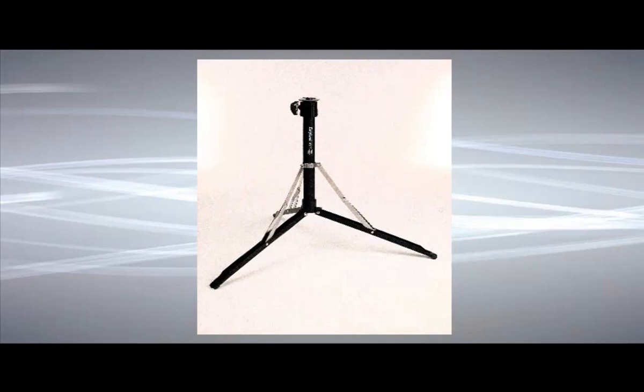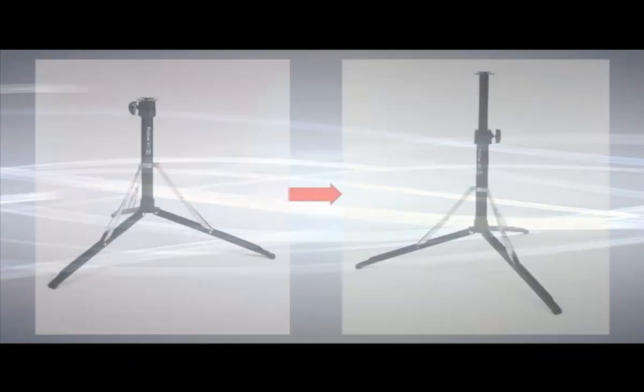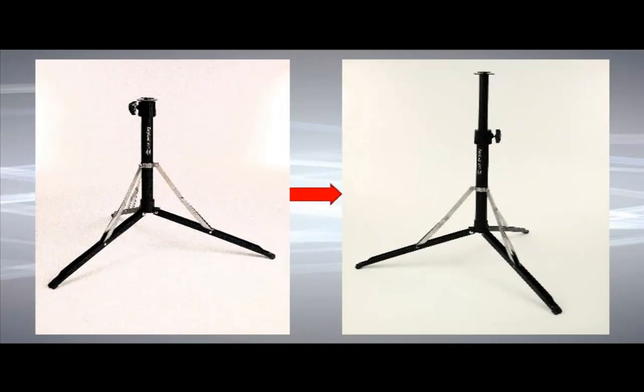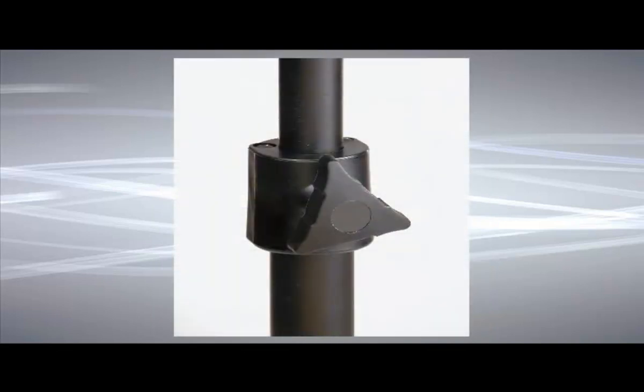Set the tripod on the floor and loosen the thumb lock knob on the tripod base. Extend the inner tripod tube to a comfortable height and turn the tripod so that one of the flat sides of the tripod head is facing you. Tighten the thumb lock knob.